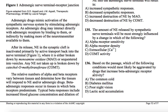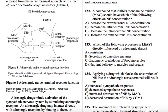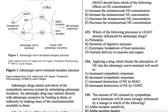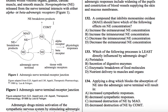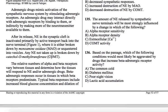Any norepinephrine not taken up is broken down by catechol-O-methyltransferase — COMT. So we have monoamine oxidase, which breaks down the neurotransmitter in the presynaptic neuron, up here, and then you have COMT, which will break down whatever is left in the synaptic cleft.